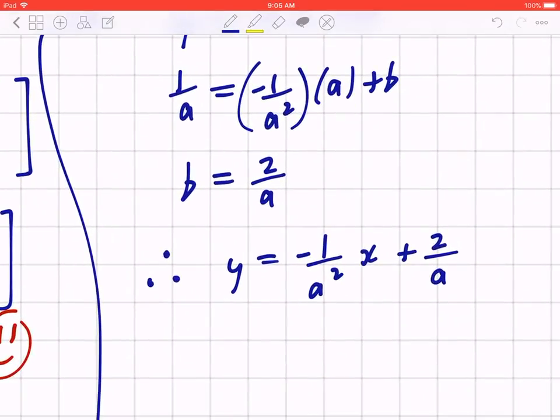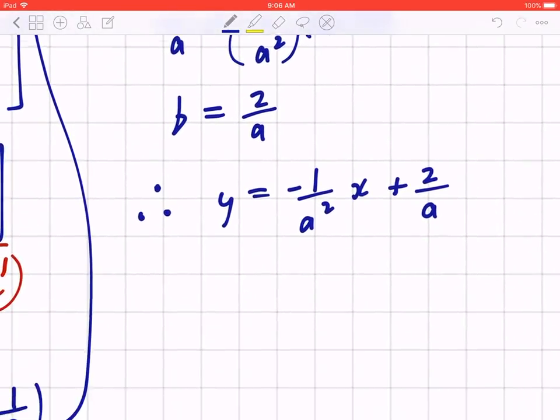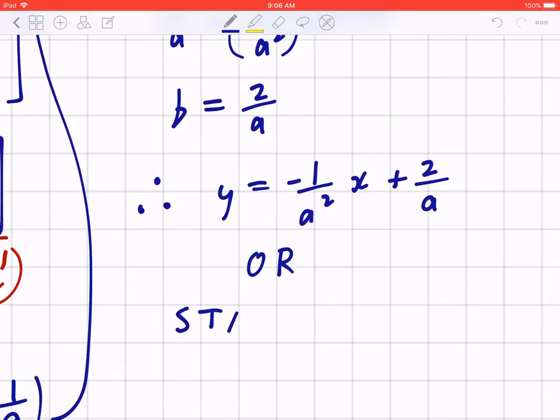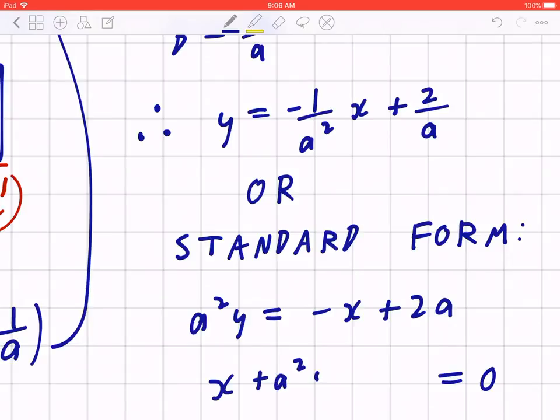I am going to use this to update my graph, but I also want to show you as an additional note how to express this in terms of standard form. So if you want to express this in standard form, which is very useful as well, you have to make sure that a, b, c cannot be a fraction, it cannot be a decimal, and a is always positive. So you can multiply everything by a squared. So that's going to give you a squared y, which equals negative x plus 2a. You can bring it to one side, equate it to zero, I'm going to bring it to the left. So x plus a squared y minus 2a. So that's the standard form.